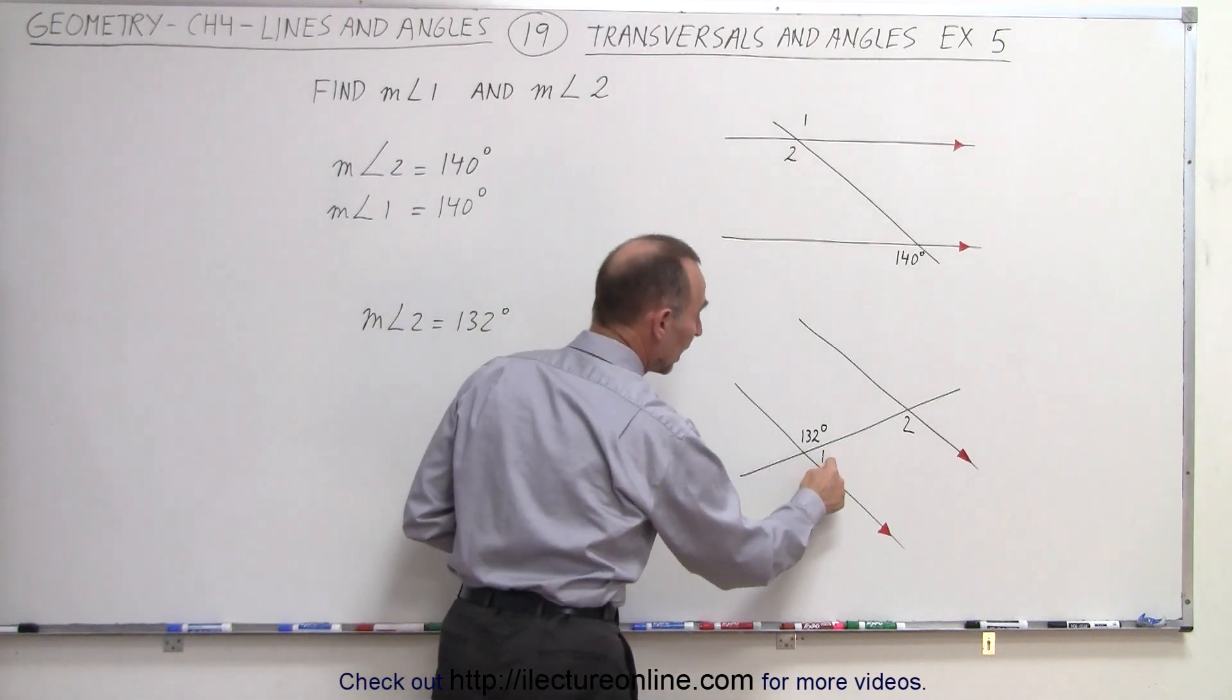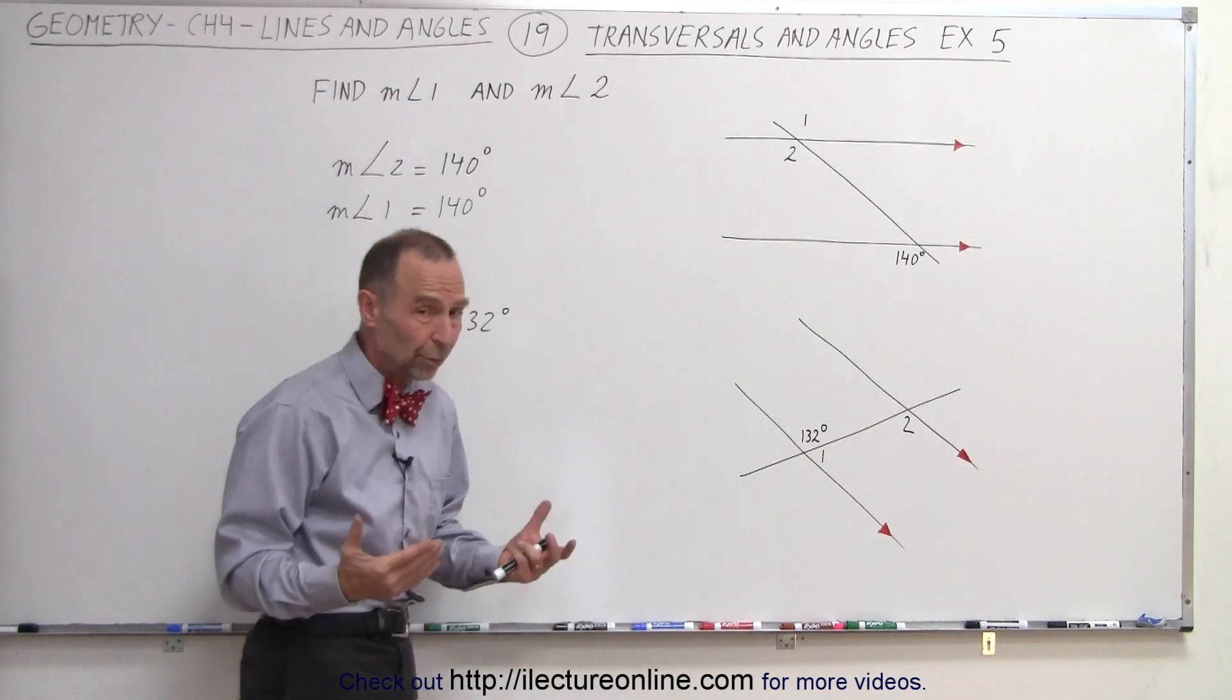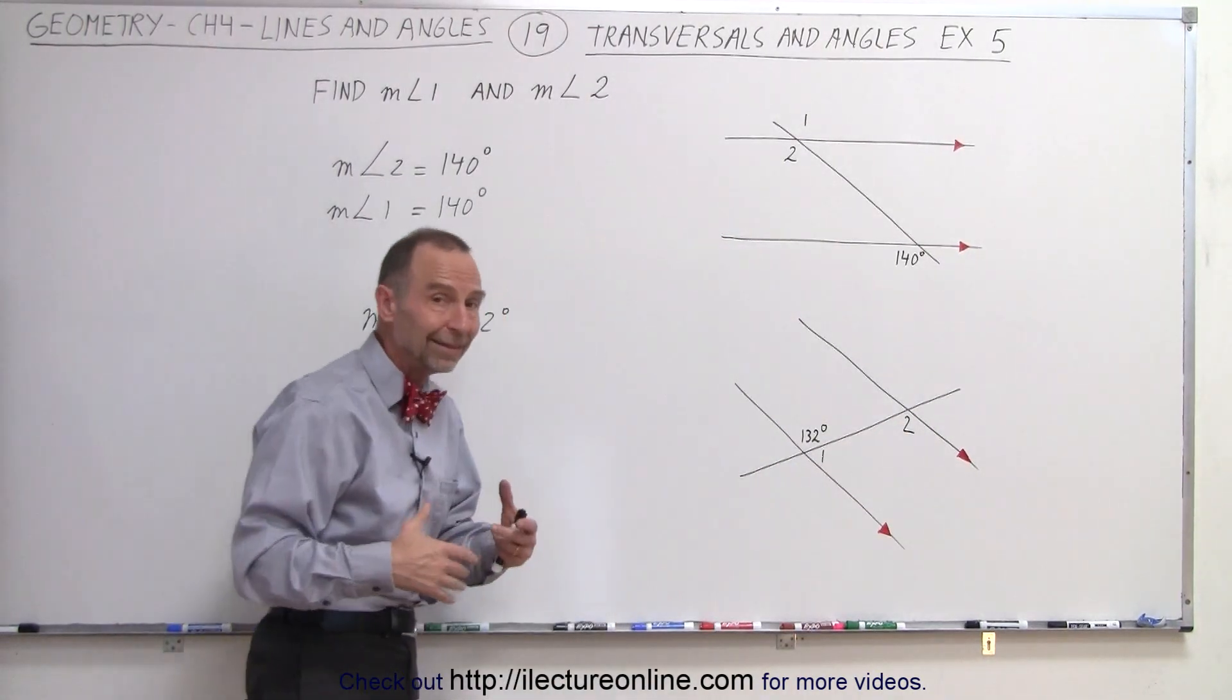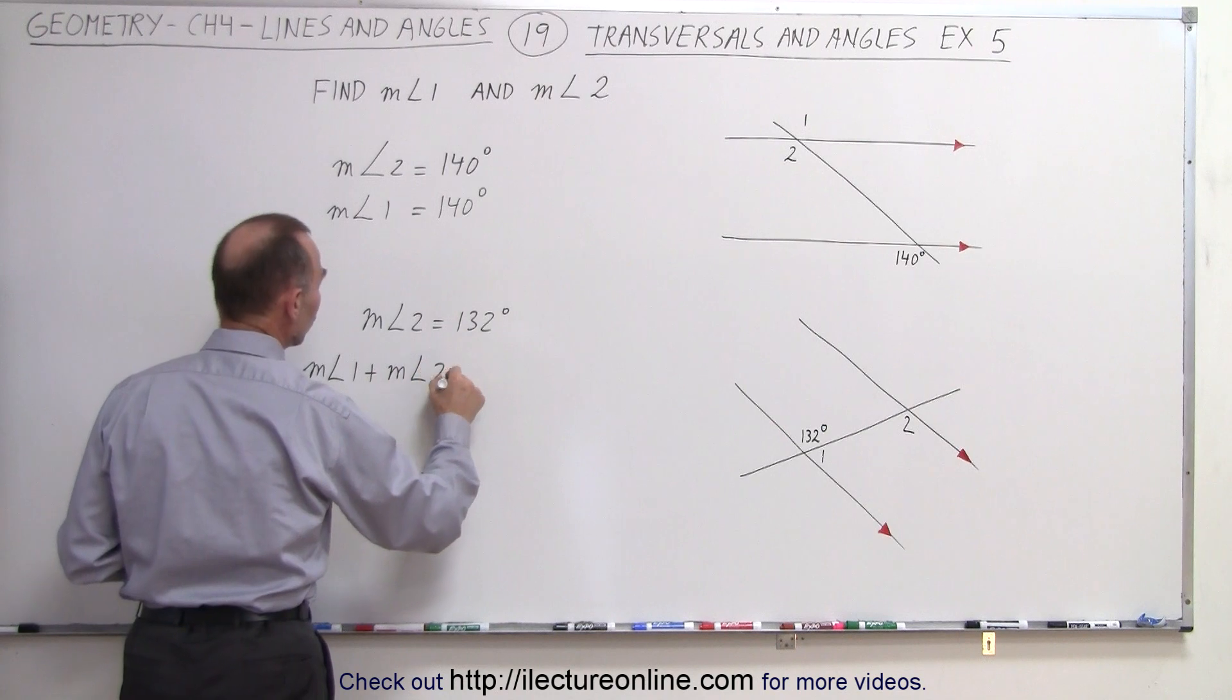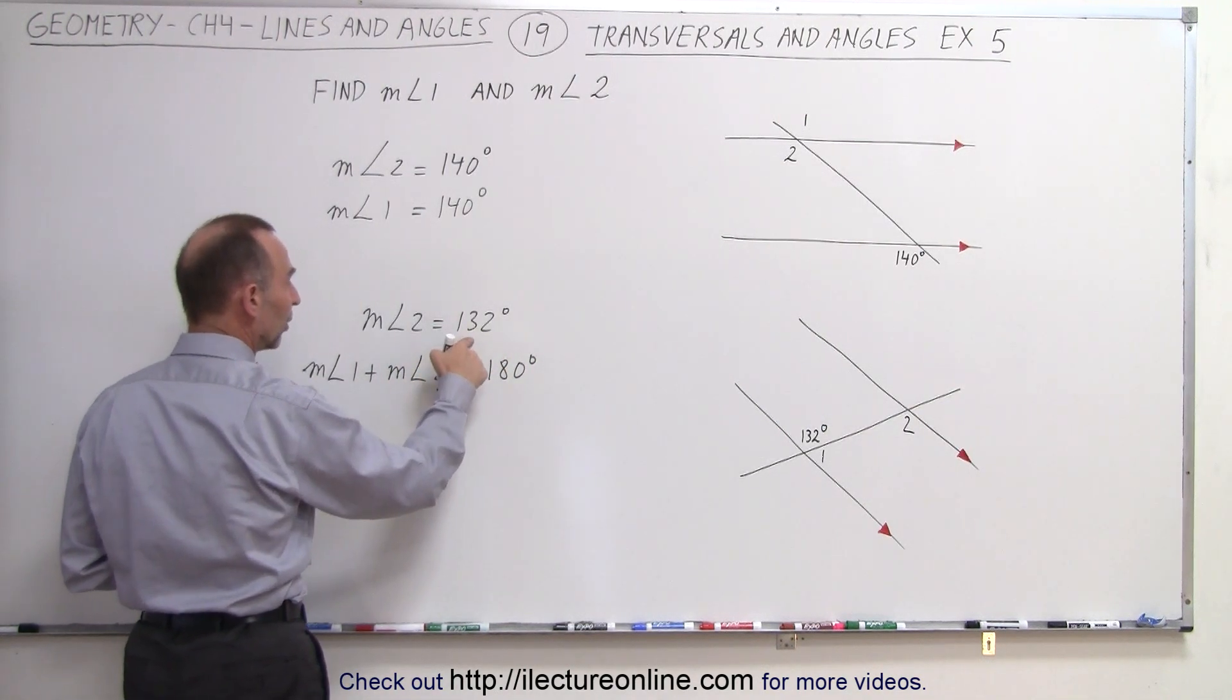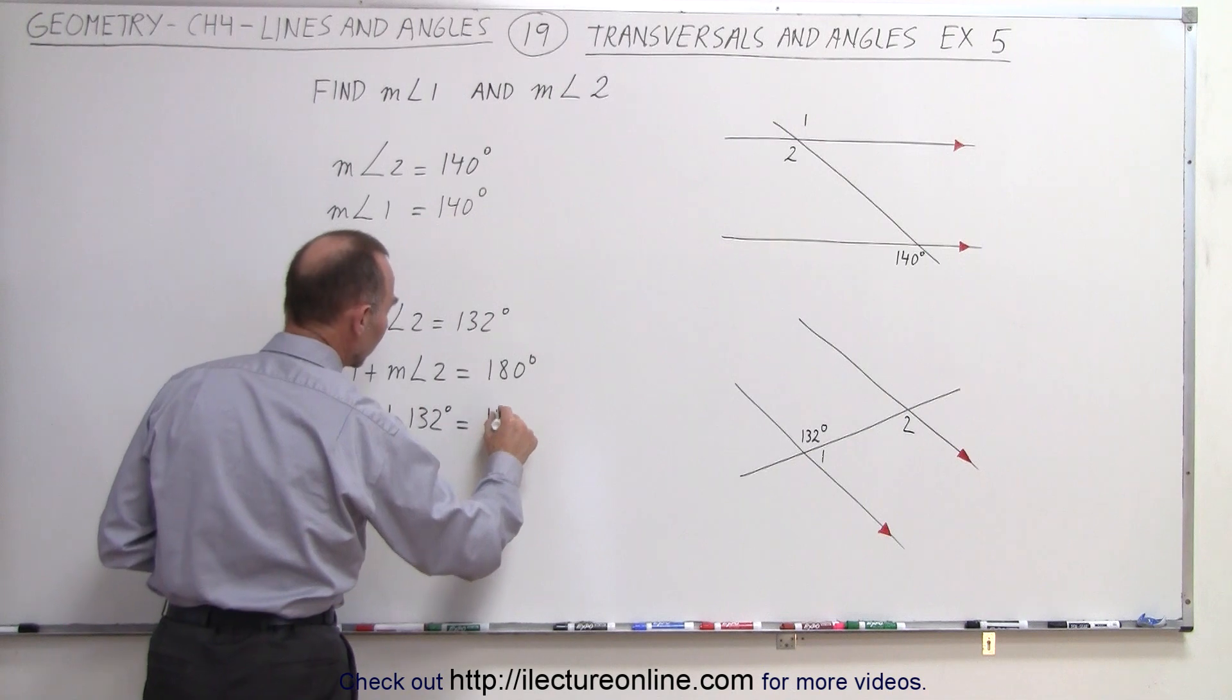Now we can see that angle 1 and angle 2 are consecutive interior angles, or we can say that angle 1 and 132 degrees are supplementary angles. Either way, the rule is that those angles must add up to 180 degrees, at least their measures must add up to 180 degrees, which means that the measure of angle 1 plus the measure of angle 2 must add up to 180 degrees. And we know that the measure of angle 2 is 132 degrees, so the measure of angle 1 plus 132 degrees adds up to 180 degrees.